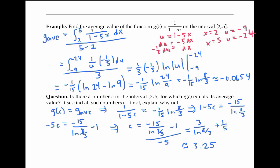So we've demonstrated that g does achieve its average value over the interval. But in fact, we could have predicted this to be true: g's average value has to lie somewhere between g's minimum value and maximum value on this interval. And since g is continuous on the interval from two to five, it has to achieve every value that lies between its minimum and maximum, including its average value.